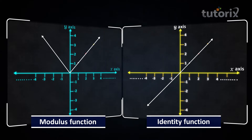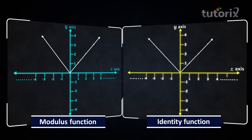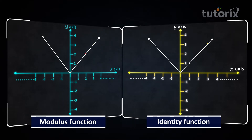Now let's compare the graphs of the identity function and the modulus function. The graphs of both functions are the same on the right side of the y-axis. To form the graph of the modulus function on the left side, we simply take the mirror image of the identity function's graph with respect to the x-axis — this changes negative output values into positive output values, since the modulus function outputs only positive real numbers.